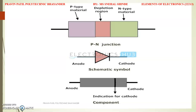This is the P-N junction diode and below it is the P-N junction symbol. Anode and cathode are the two terminals of the P-N junction diode. To recognize the component, the black color ring near a terminal indicates the cathode terminal, and the other terminal is the anode. This is the component representation of the P-N junction diode.